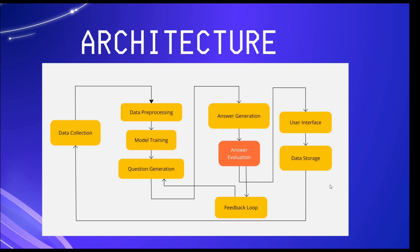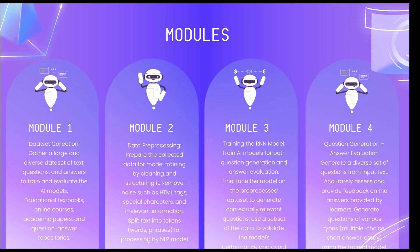It will store the data in the database and give feedback on your overall marks and accuracy. The models involved include dataset collection of various subjects — numerical, physics, computer science, engineering. In the pre-processing part it removes unwanted data links, author names, and other irrelevant content. Then the RNN training part stores and evaluates all the content.